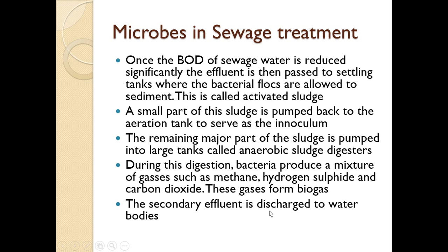From the settling tank, we have the activated sludge — some is taken to the aeration tank and the rest to the anaerobic sludge digester where it gets digested. The secondary effluent is now less harmful, and it is discharged into the water bodies.